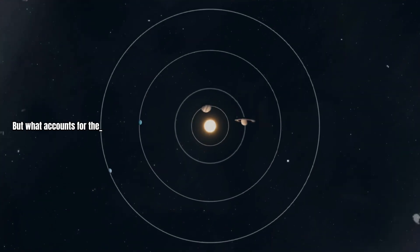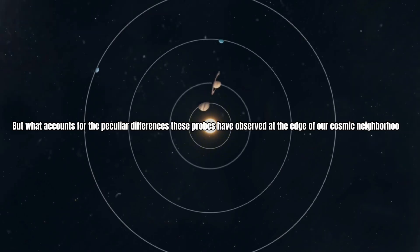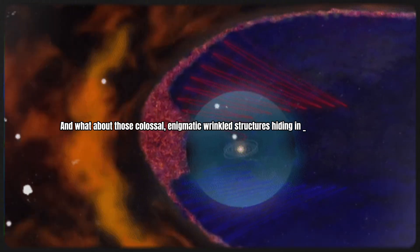But what accounts for the peculiar differences these probes have observed at the edge of our cosmic neighborhood, and what about those colossal, enigmatic wrinkled structures hiding in the heliosphere?